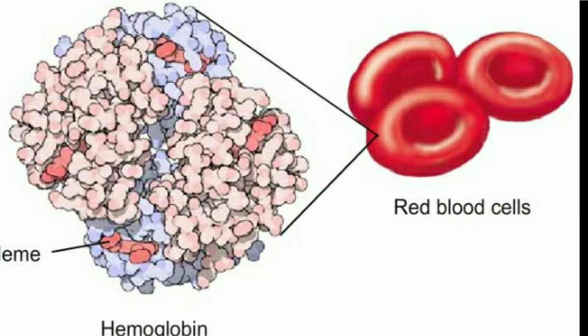Blood is composed of a fluid called plasma, in which different types of cells are suspended. One type of cells are the red blood cells, RBCs, which contain a red pigment called hemoglobin. Hemoglobin binds with oxygen and transports it to all parts of the body, ultimately to all parts of the cells. It would be difficult to provide oxygen efficiently to all the cells of the body without hemoglobin. The presence of hemoglobin makes blood appear red.